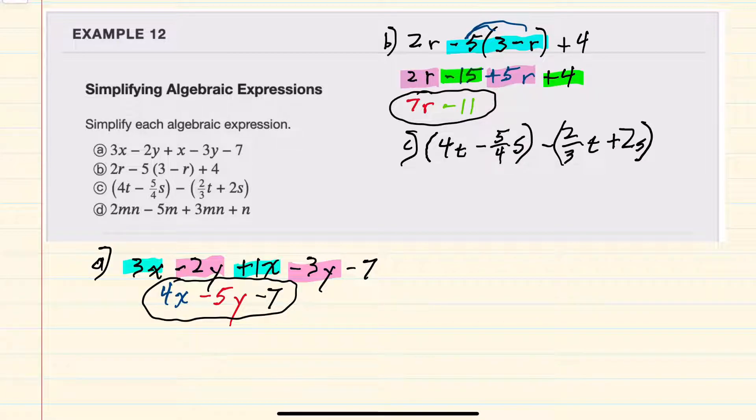For expression C, we also have parentheses that we will want to evaluate so that we can drop those parentheses. And here the first parentheses is grouping the 4t minus 5 fourths together. But there's no operation here to be done. So I can drop the first parentheses.